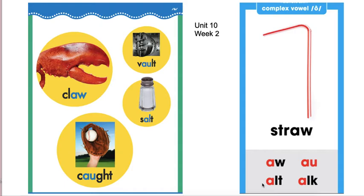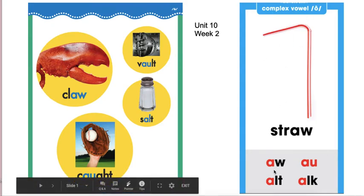We are going to be working with the sound 'ah'. Now the sound 'ah' can be spelled in different ways. Look here where the straw is on this card. You can see it could be spelled A-W, A-U, A-L-T, and A-L-K. Whenever you see those patterns, know that the sound is 'ah', like in claw, vault, salt, and caught.